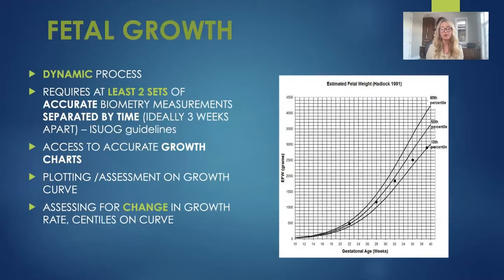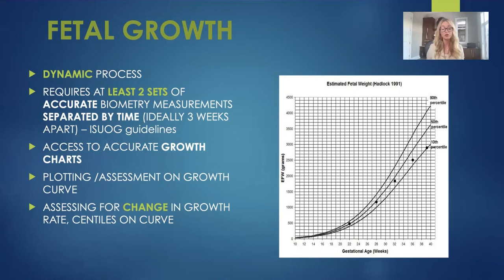You can't assess whether there's been appropriate fetal growth without performing another set of measurements or having a previous set of biometry measurements to compare with. Fetal growth is a dynamic process and it requires at least two sets of accurate biometry measurements separated by time. ISUOG recommends ideally a three-week interval, but no less than one. If you observe any larger increase or decrease in growth velocity, it's important to note this would be most critical in cases of a sudden deceleration in growth, where a referral to an MFM facility for possible Doppler assessment, follow-up growth scans, and closer monitoring would be indicated.